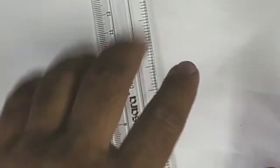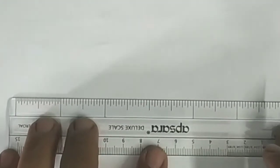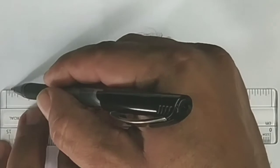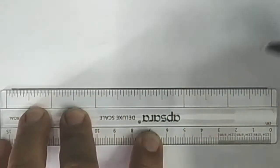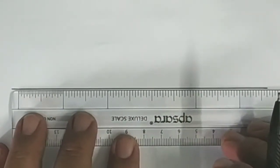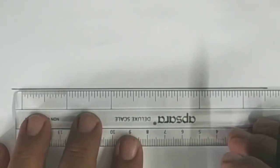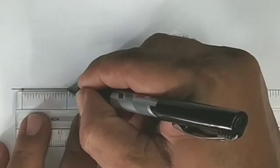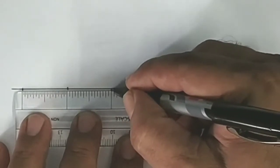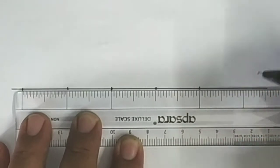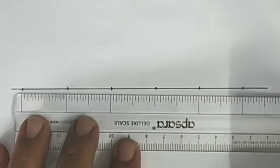First, I will draw a straight line. Now, I will mark equal distances along the line.